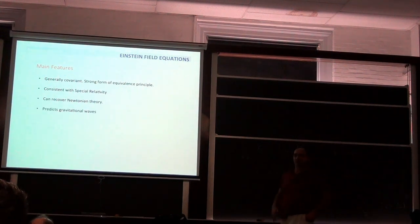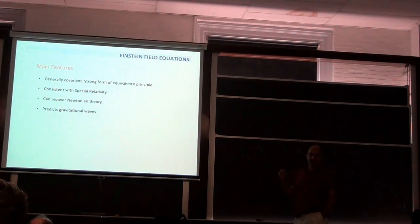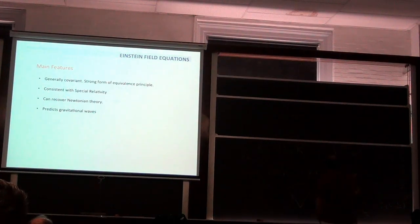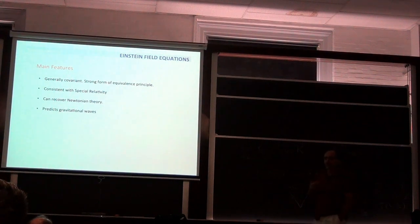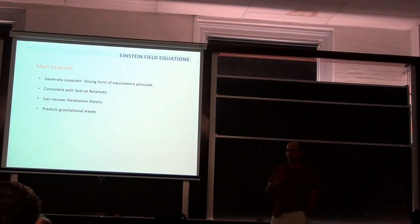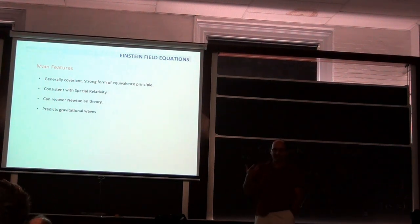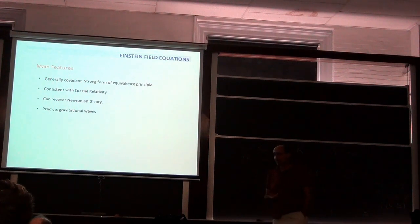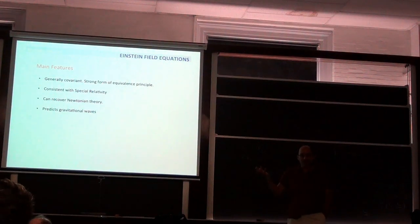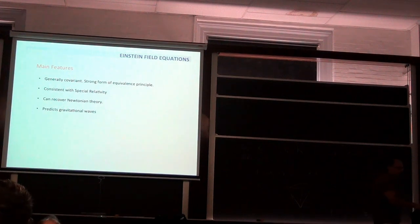The theory predicts gravitational waves because it is a hyperbolic system. The wave equation comes up naturally all the time. At the time Einstein found this, it was a huge surprise, but once you have the theory it's obvious. There are also non-trivial solutions in vacuum — you don't need matter fields to get a non-trivial solution, just as Maxwell's theory has electromagnetic waves propagating without charges.